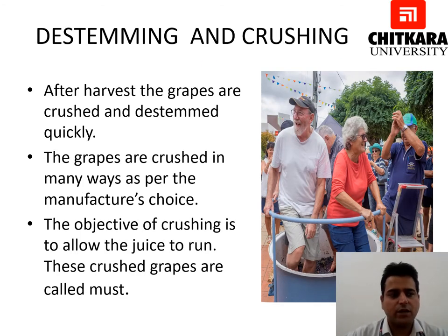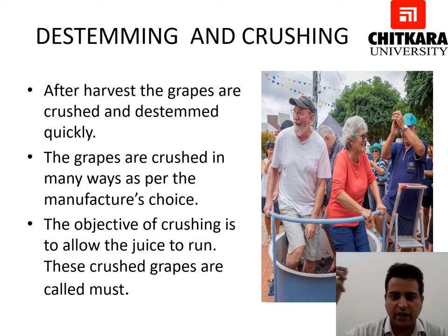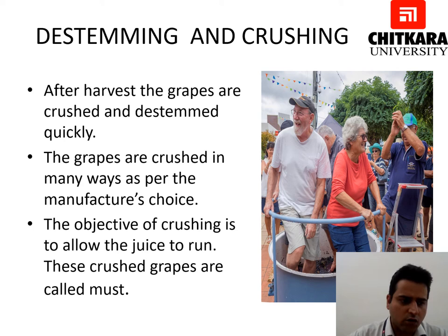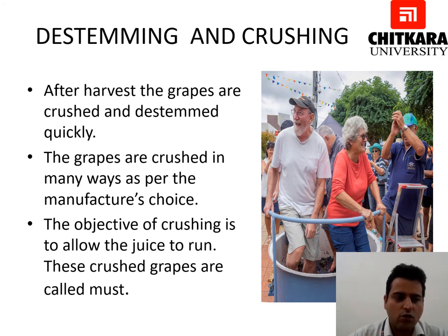The second step is de-stemming and crushing. After harvest, the grapes are crushed and de-stemmed quickly. De-stemming means removing the stem from the grapes. The grapes are crushed in many ways as per the manufacturer's choice, such as hydraulic or revolving cylinders. The objective of crushing is to allow the juice to run. These crushed grapes are called must. In remote mountain areas, the old foot pressing method is still also followed.